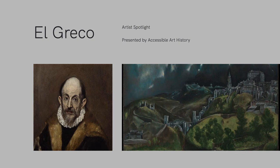Welcome back to the Accessible Art History YouTube channel. Today's video is another in our Artist Spotlight series, focusing on El Greco. He is often considered to be the father of the Spanish Renaissance. His works are known for their elongated figures, rich pigment, and tight composition. Although his contemporaries were often confused by his work, centuries after his death it inspired many movements, including Expressionism and Cubism. This video is going to explore his life and three of his major works.